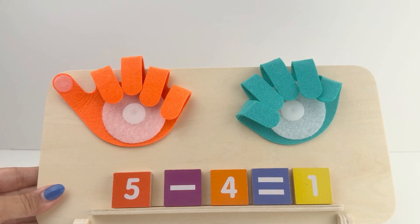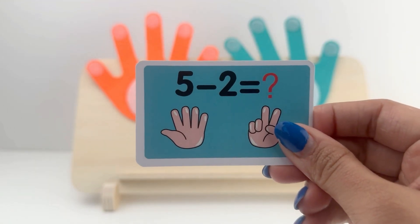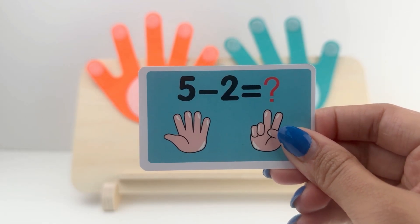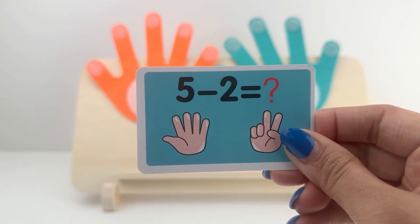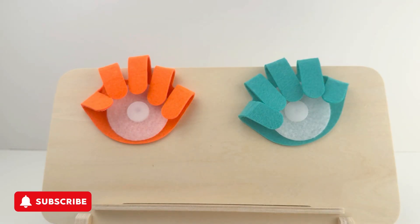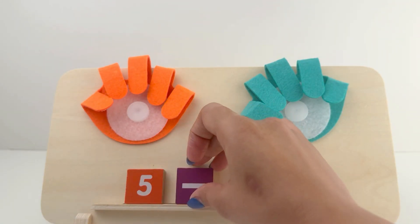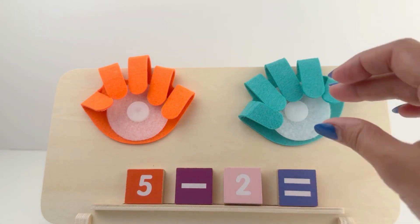Good job, friends. Let's read our next card. It says 5 minus 2 equals. Come, let's find out together. Let us place the blocks on the board. 5 minus 2 equals.